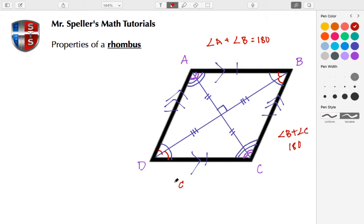Angle C plus angle D is 180, and lastly angle A plus angle D is 180 degrees.